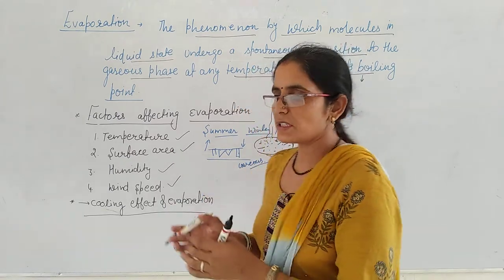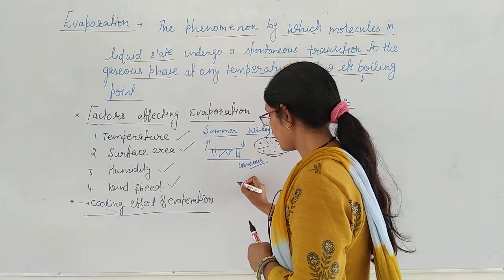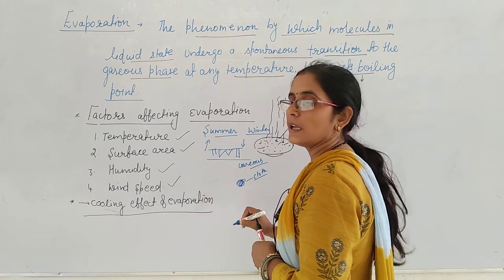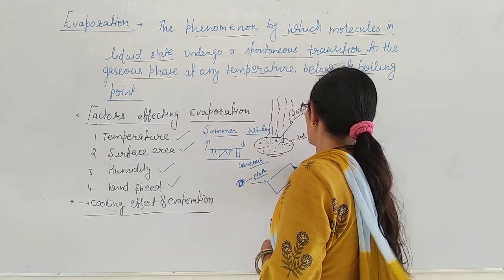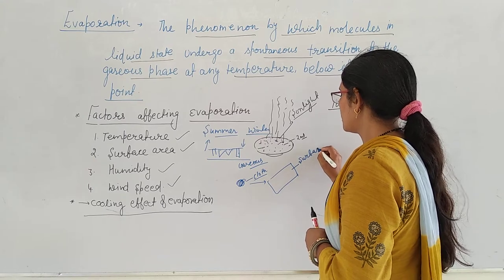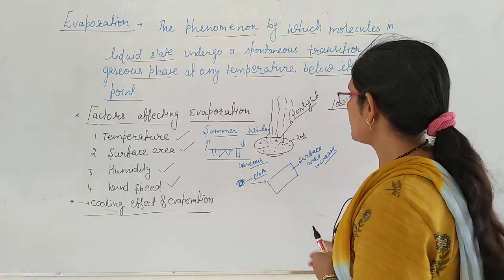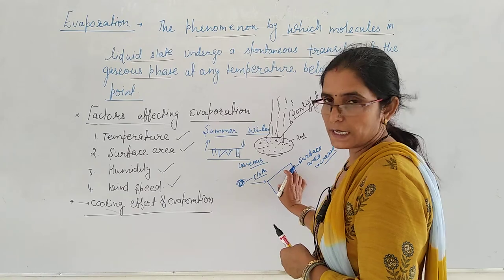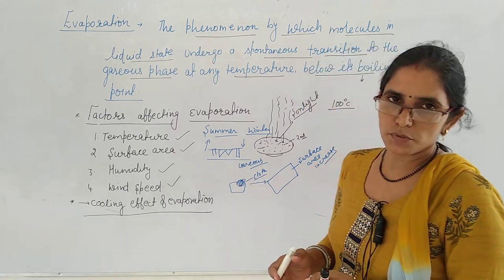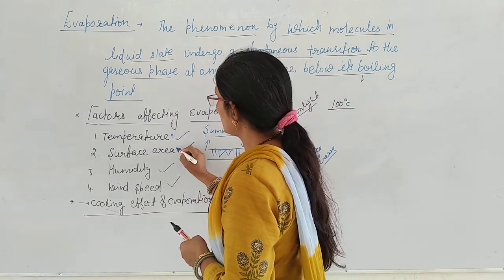The next factor is surface area — the total area which comes into contact for evaporation. For example, if you spread your clothes out flat, the surface area is increased. When the surface area increases, evaporation increases and the water changes faster. So with increased temperature, evaporation increases, and with increased surface area, evaporation also increases.